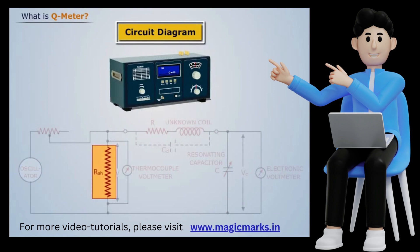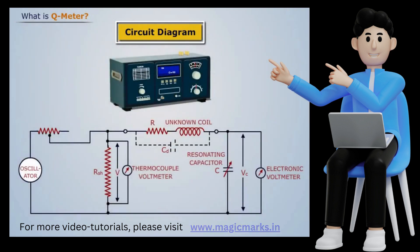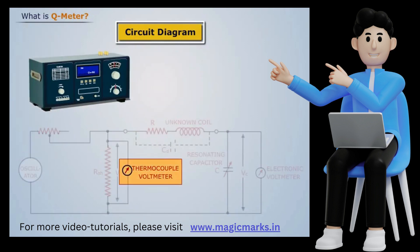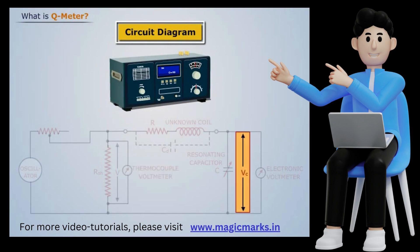So it introduces almost no resistance into the oscillatory circuit and represents a voltage source with a very small or almost negligible internal resistance. The voltage across the low value shunt resistance RSH is measured by a thermocouple meter and the voltage across the capacitor VC is measured by an electronic voltmeter.